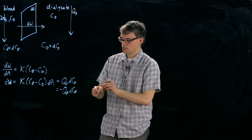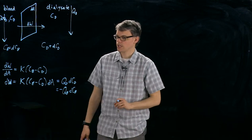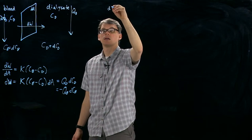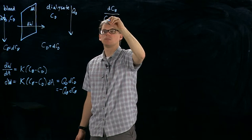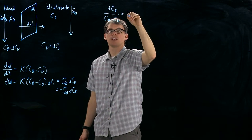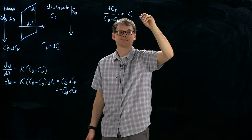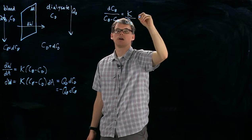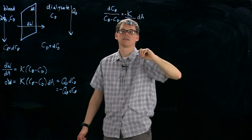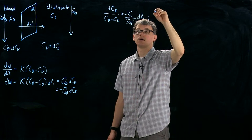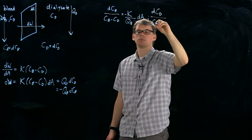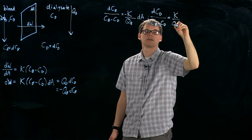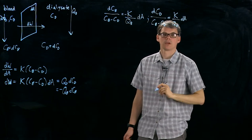So let's look at these two equations here, three equations really, and rearrange them. So first, we'll write dCB over (CB - CD) equals -K times 1/QB times dA. Oh, and I forgot a minus sign. And we can also write dCD over (CB - CD). In this case, we don't need a minus sign. So there we go.